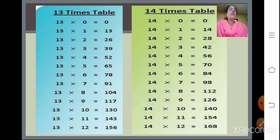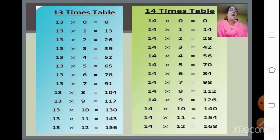You have to learn and know the tables by heart. Table of 14: 14 zeros are 0, 14 ones are 14, 14 twos are 28, 14 threes are 42, 14 fours are 56, 14 fives are 70, 14 sixes are 84, 14 sevens are 98, 14 eights are 112, 14 nines are 126, 14 tens are 140, 14 elevens are 154, and 14 twelves are 168.